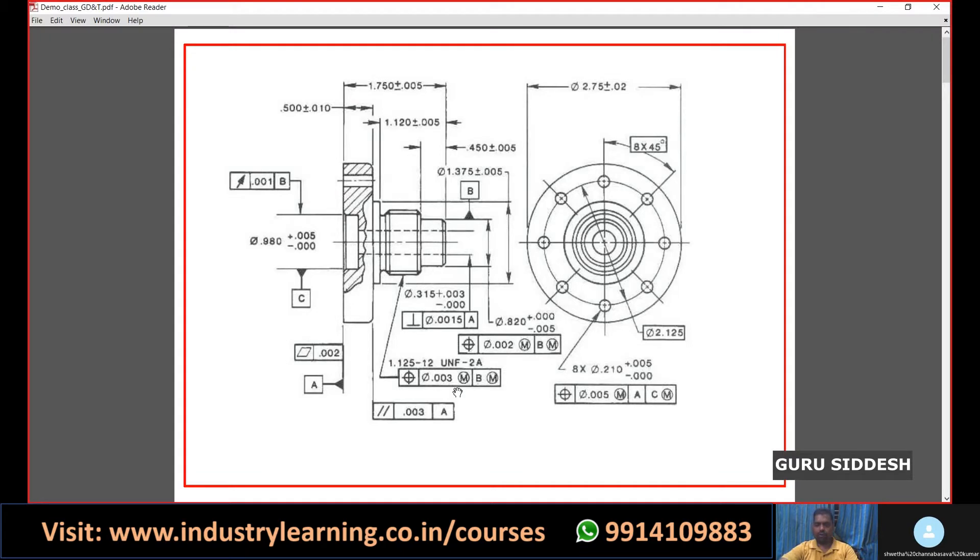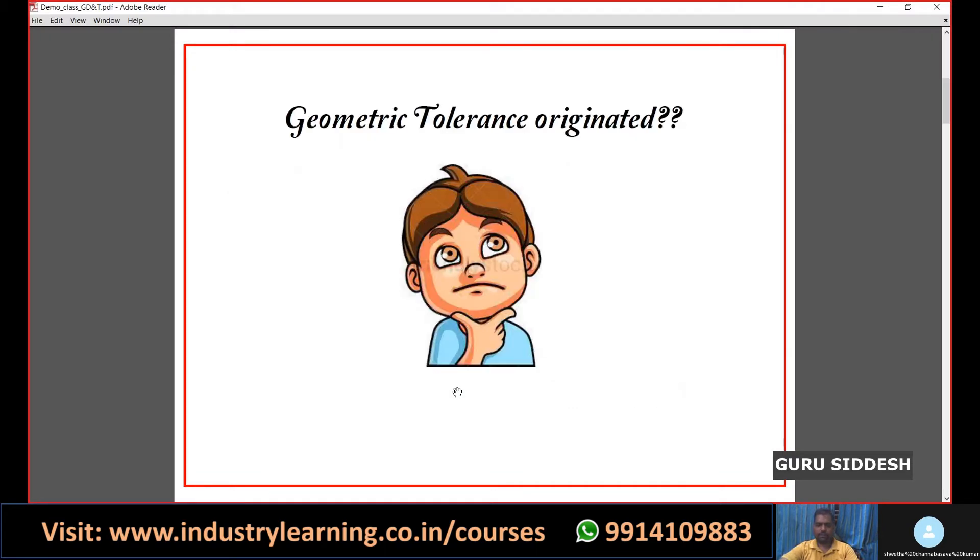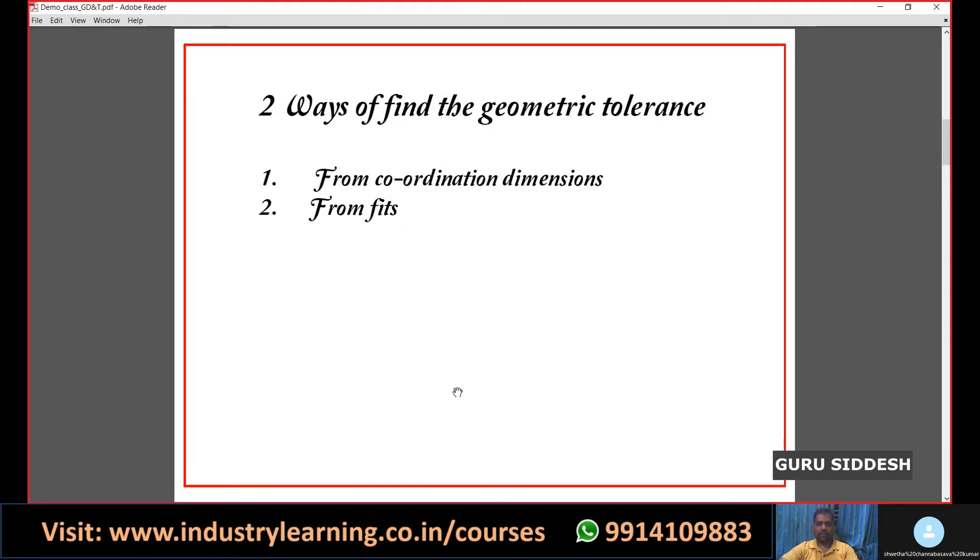There are two ways to find out the geometrical tolerance. One method is from the coordinate dimensions and another is from the fits. First we will see from coordinate dimensions - how we can generate a geometrical tolerance.